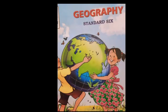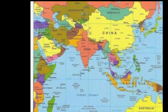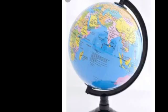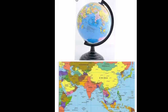Hello students, today we are going to learn Standard 6 Geography, Lesson Number 3: Comparing a Globe and a Map. For this we have to do one activity. This is the picture of a map and this is the picture of a globe. I will keep both pictures in front of you together. You have to observe first, and then I will ask the questions. Shall we start?